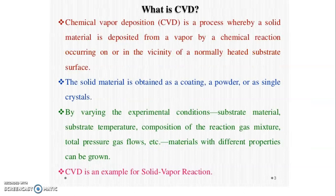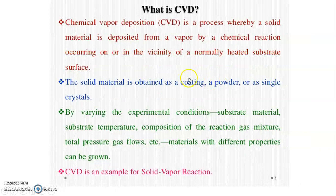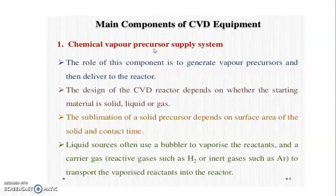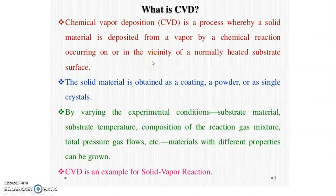Chemical vapor deposition is a process whereby a solid material is deposited from a vapor by chemical reactions occurring on or in the vicinity of a normally heated substrate surface. The solid material is deposited as a coating, a powder, or a single crystal.